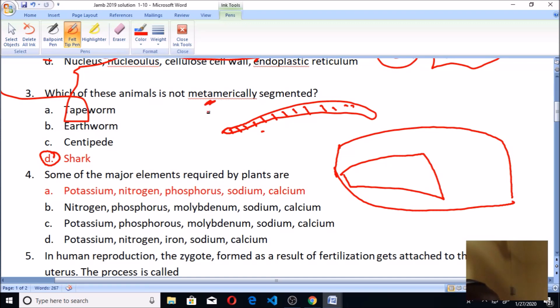Let's look at number four questions. Some of the major elements required in plants are: there are some elements that are majorly required in plants in order to supply them with nutrients, and such elements are potassium, nitrogen, phosphorus, sodium, and calcium. Molybdenum is not supposed to be there, and that is what is making this one not to be among what is needed.